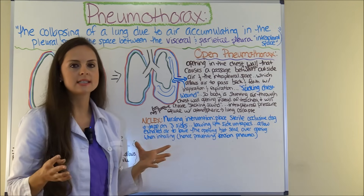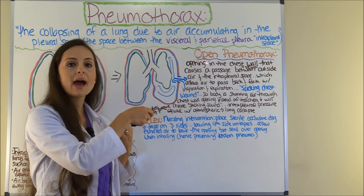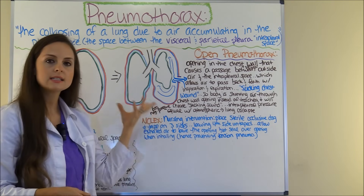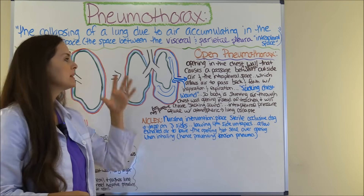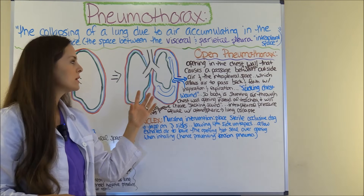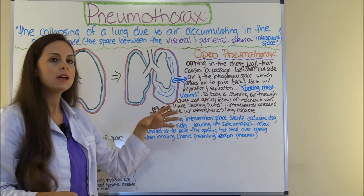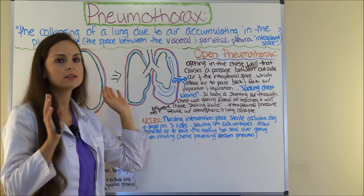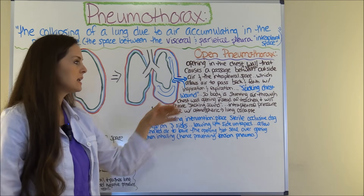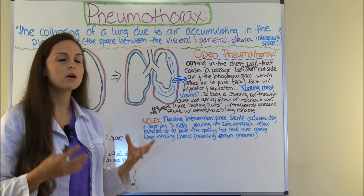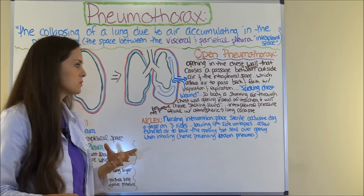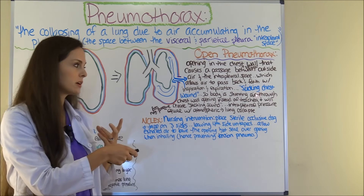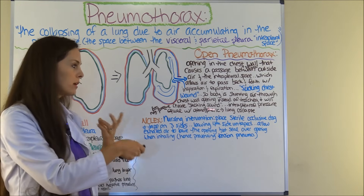Now let's look at open pneumothorax. This is where there is an opening in the chest wall that creates a passage between outside air and the intrapleural space. For example, if a patient was stabbed, the wound creates an opening allowing inhaled and exhaled air to pass back and forth through the chest wall. As air passes in and out, you can hear a sucking sound — this is sometimes referred to as a sucking chest wound. The body is shunting air through the chest wall instead of the trachea, and the intrapleural pressure becomes equal with outside pressure, leading to lung collapse.